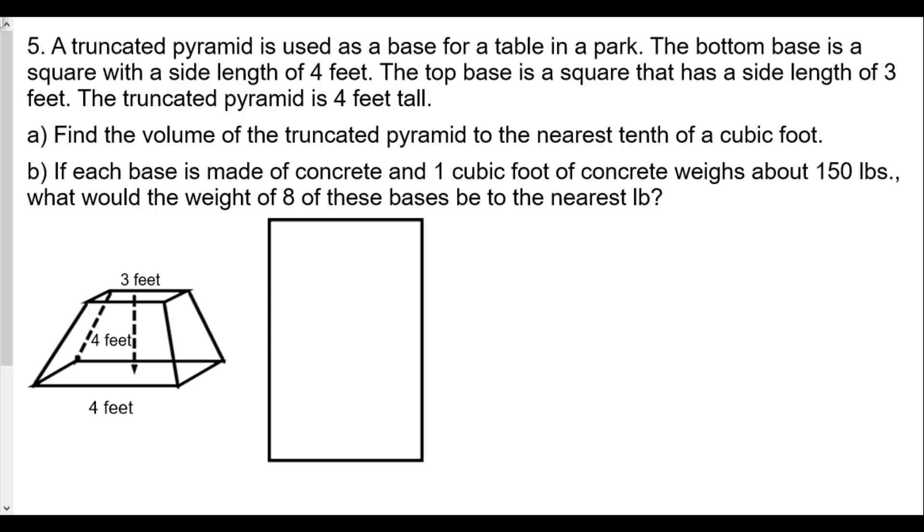Welcome back everybody, this is going to be our final exam review part 2 question 5. This one is a truncated pyramid used as a base for a table in a park. The bottom base is a square with a side length of 4 feet, the top base is a square with a side length of 3 feet, and the truncated pyramid is 4 feet tall. Part A asks us to find the volume of the truncated pyramid to the nearest tenth of a cubic foot. Part B: if each base is made of concrete and one cubic foot of concrete weighs 150 pounds, what would the weight of eight of these bases be to the nearest pound?